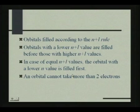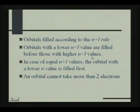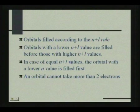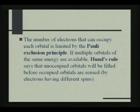Similar cases arise with 3P and 4S. To recap the N plus L rule: orbitals with a lower N plus L value are filled before those with higher N plus L value. In case of equal N plus L values, the one with lower N is filled first. Also, you must remember that an orbital cannot take more than 2 electrons.